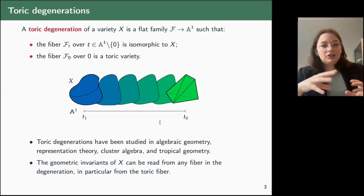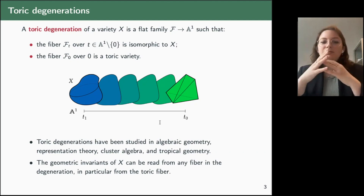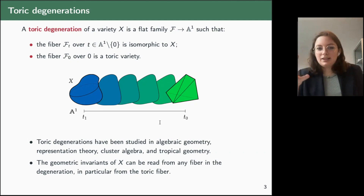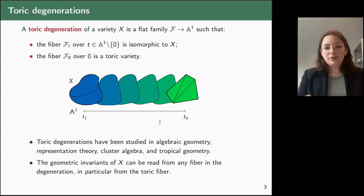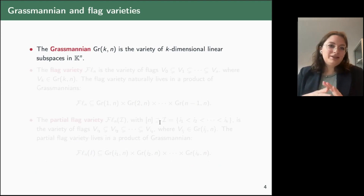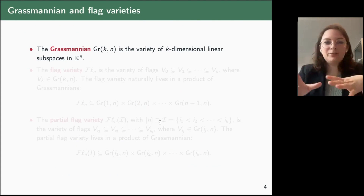Toric degenerations have been studied in many different fields of geometry and can be constructed in many different ways. Today we are going to see how to construct them using methods from tropical geometry. We are interested in Grassmannians and partial flag varieties.